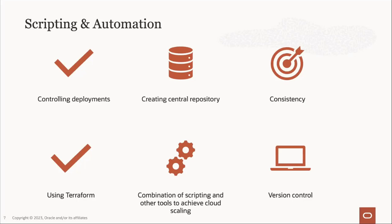If you want to control deployments — creating infrastructure, deploying applications — you want centralized repositories, whether it's GitHub, and consistency is key. If you run the same scripting many times, you want a reliable output every single time. OCI recommends using Terraform, an open-source language from HashiCorp, to build all automation from an infrastructure perspective. Terraform is our go-to language for automating anything you want to build in OCI. And of course, version control — if you want to upgrade or enhance existing resources, you can version-control your scripts. Source control should be there, controlling deployments should be there, and the automation language, et cetera.